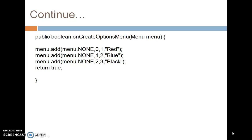For example: menu.add(Menu.NONE, 0, 1, "Red") — the group is none, order ID is 0, item ID is 1, and the label is Red. That means when we click on the Red item, the background color of the relative layout is set to red. Similarly, menu.add(Menu.NONE, 1, 2, "Blue") and menu.add for the Black label. In this way we add items to the menu using the add method with four parameters in onCreateOptionsMenu.